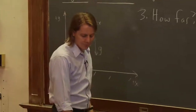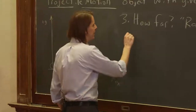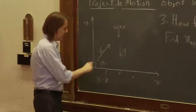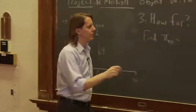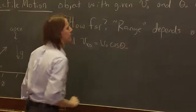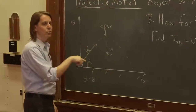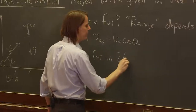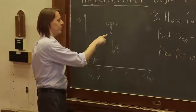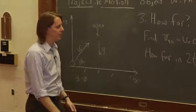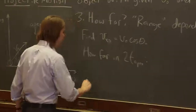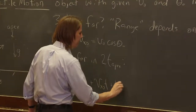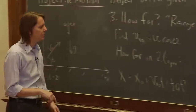So the two are always interrelated — you just calculate them separately. First, we need to find v_x naught, the initial component in the x direction. That's just v naught cosine theta naught. Then we figure out how far it goes in two times the time to the apex, because it takes that long to go up and that long to come down. During the whole time it's moving in the x direction. So we use the standard kinematics equation: x position is x naught plus v_x naught times time plus one-half a times t squared.